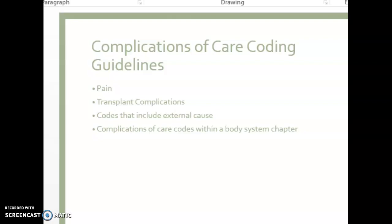The second coding guideline deals with transplant complications. Transplant codes under Category T86 are used for both complications of transplanted organs as well as the rejection of those organs. Just because a patient had an organ transplanted doesn't mean their body is accepting it — there are lots of rejections. In those instances, two codes are needed: one for the specific transplant complication, and a second to identify specifically what that complication was.